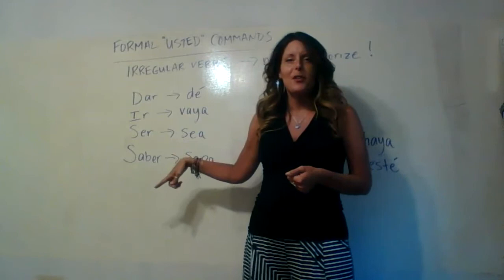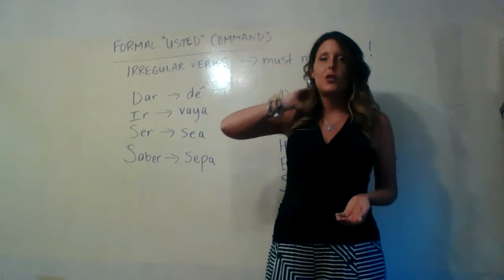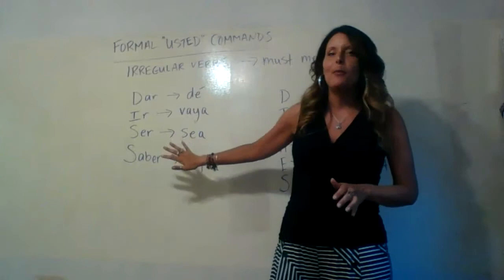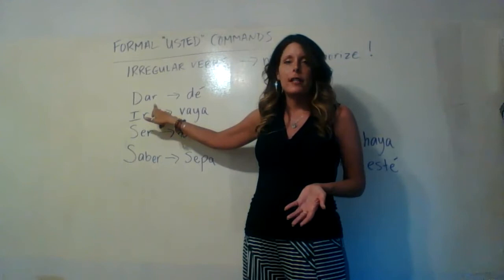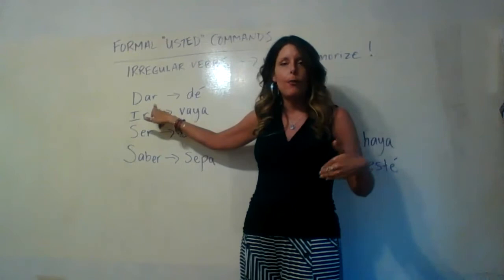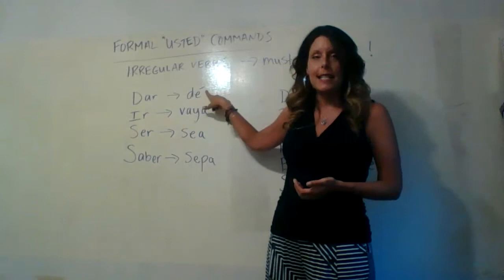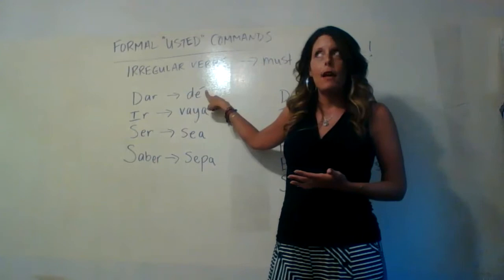Are there more than this? Yes, I'll show them in a second. But these are the ones you'll see most often, and if I were only going to memorize four, these would be them. Dar, meaning 'to give' — if giving a command, you would say, for example, 'give me the book': dé me el libro. So the irregular formal usted command for dar is dé — D-E with an accent.